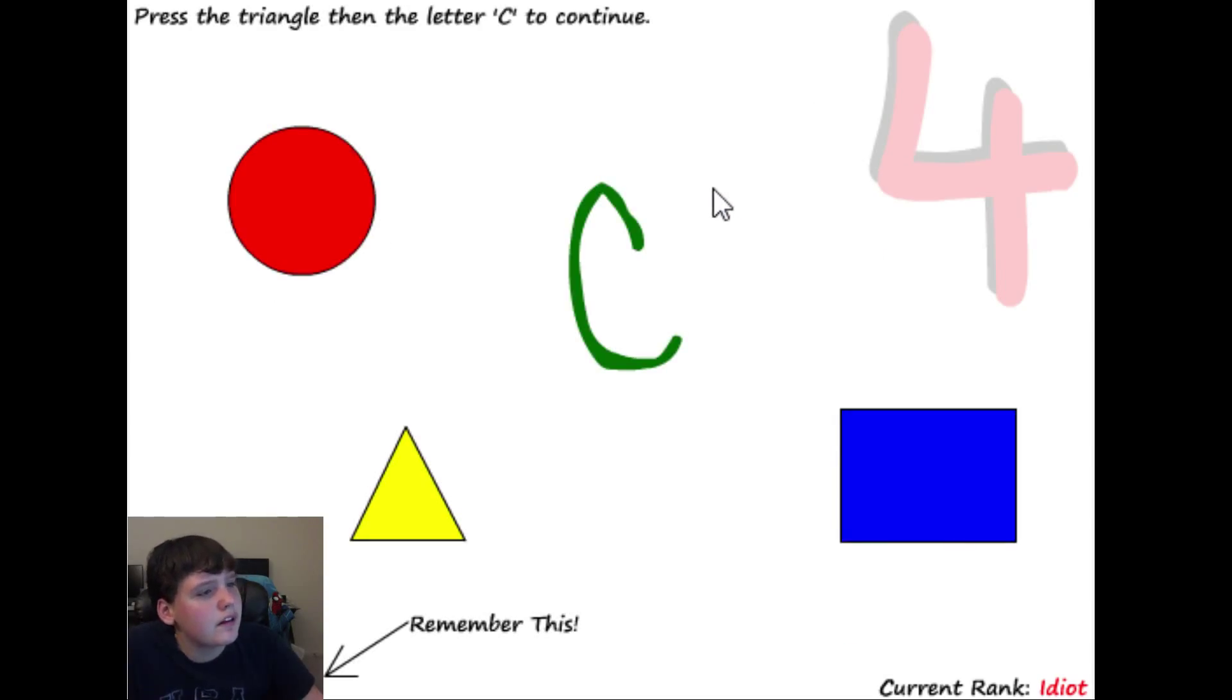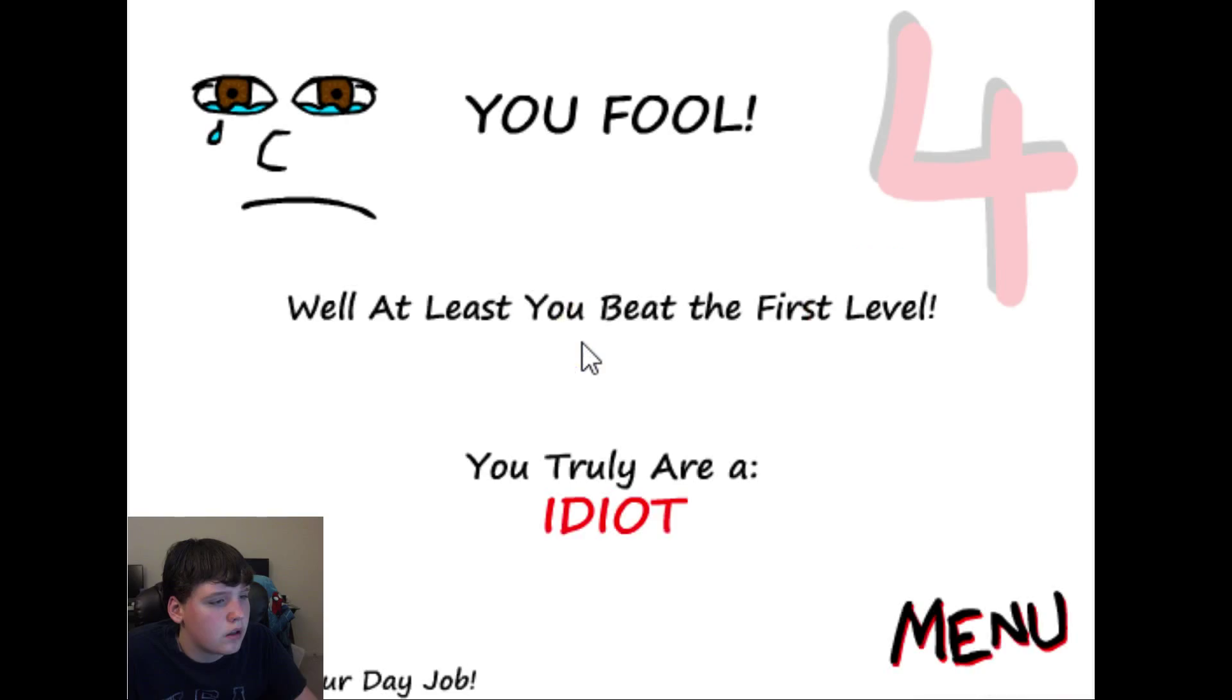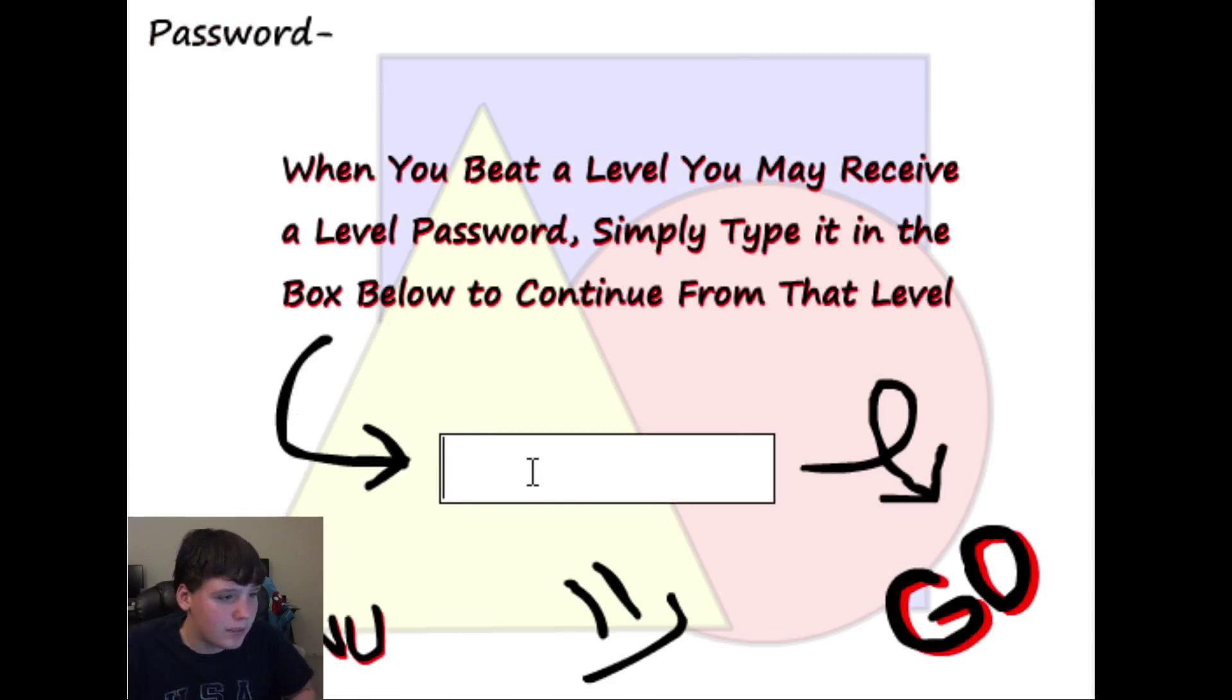Press the triangle, then the letter C to continue. What? What's this one? Red, blue, green. Remember this. Red, blue, green. I don't get it. Triangle, then the C. Where was the C? Alright. I got the password. Me is dumb. There we go. Go. Alright. Four.